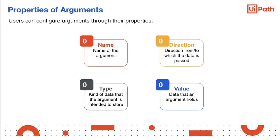Argument type defines the kind of data that the argument is intended to store. In UiPath Studio, the type is declared when the argument is created. The types of arguments are string, number, array, date and time, boolean, and data tables.